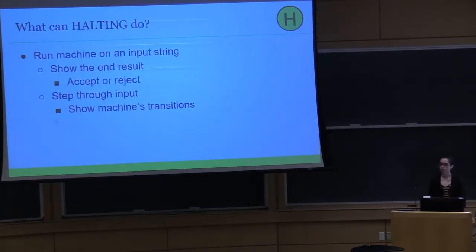And once you've built a machine, you can run on input in two different ways. One, you can just display the end result, which is if the machine accepts or rejects the string that you gave it. Or two, you can step through the input one character at a time and watch the machine transition from state to state.